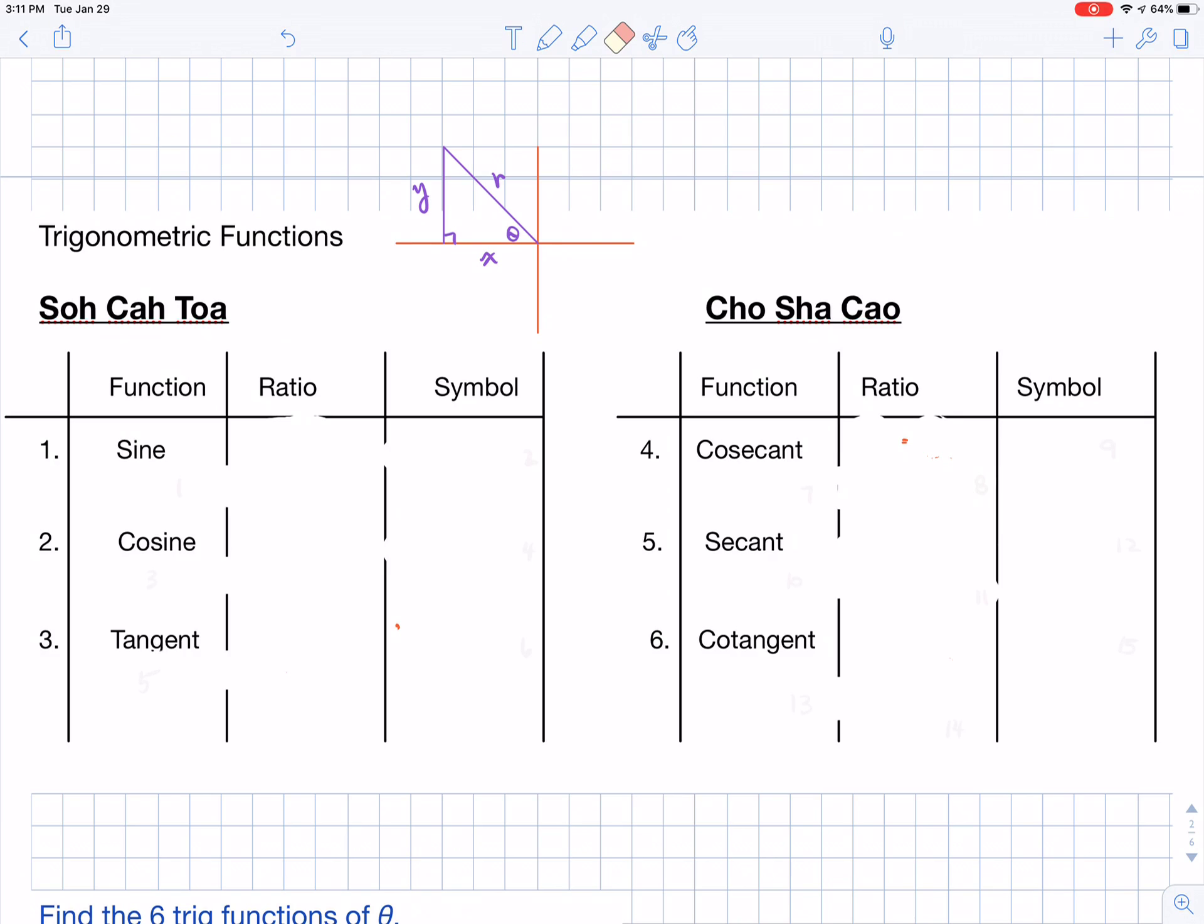Let's talk about SOHCAHTOA and the three basic trigonometric functions. The first trig function is going to be sine. Sine is always going to be the opposite over the hypotenuse.